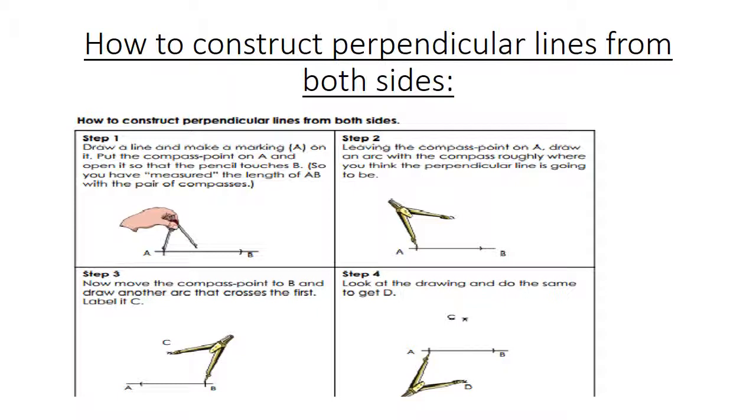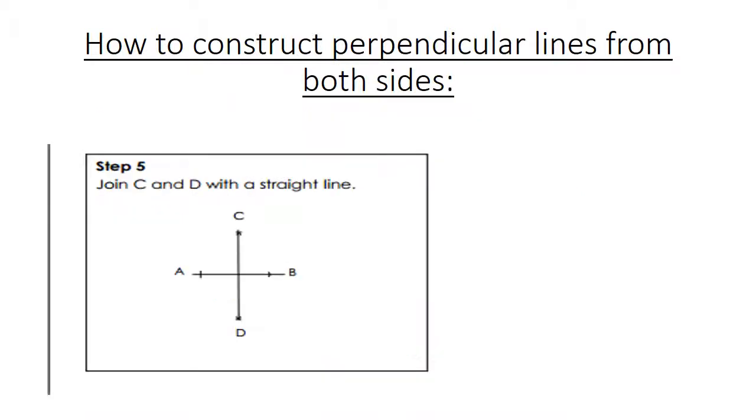Step 3: Now you move your compass point to B and draw another arc that crosses the first. Label it C. Look at the drawing and do the same to get D. Now you are going to do it at the bottom. Finally, you have constructed perpendicular lines on both sides.